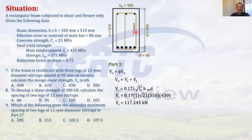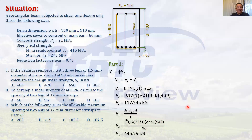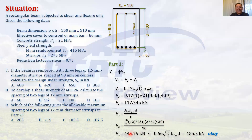For Vs, the spacing is 90 mm and there are three legs. The formula is Vs = Av · fy · d / s. Av is three legs of 12 mm: π/4 × 12² × 3. With fy = 275 and d = 430 and s = 90, Vs = 445.79 kN. But check the limiting value: 0.66√fc' · bw · d = 455 kN. Since 445.79 is less than 455, we can use this value.